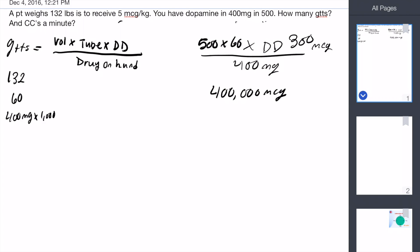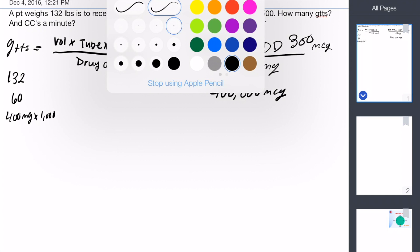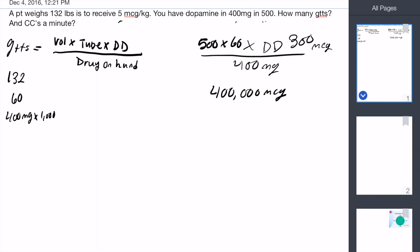Very cool. So now we can start doing the math on all this. So 500 times 60 times 300. This gives us nine million, a humongous number, over 400,000.